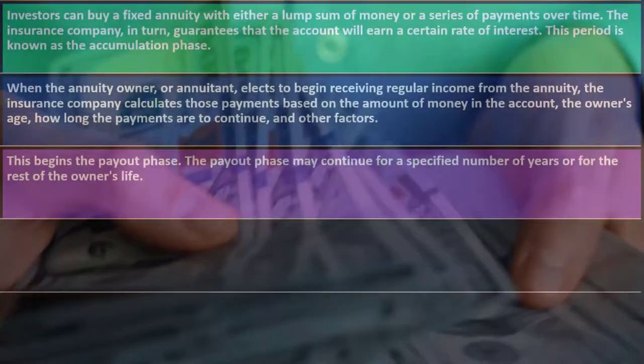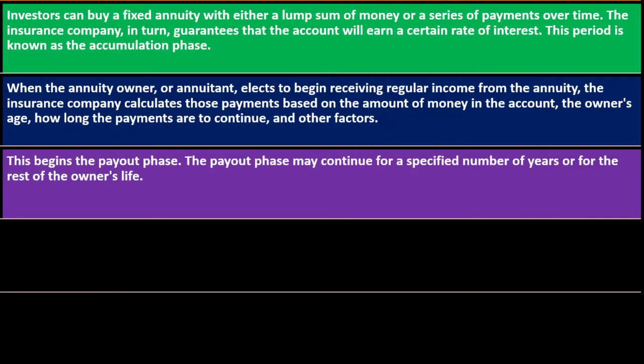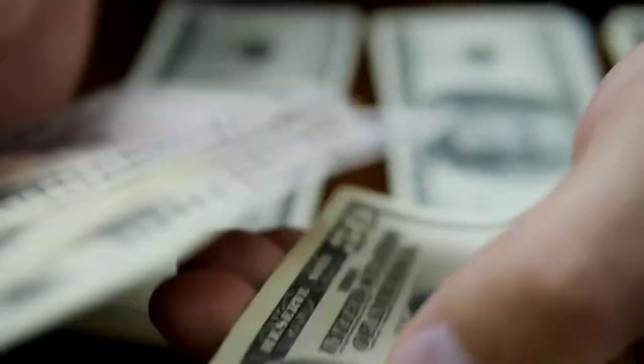This begins the payout phase. The payout phase may continue for a specified number of years or for the rest of the owner's life. If it's a specified set of years — say 20 years — the calculation is straightforward. But often you're setting up the annuity so that it pays you for your lifetime in retirement, which means once payments start, you don't know when the end date will be.